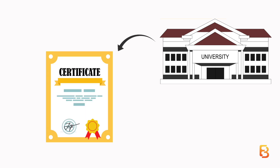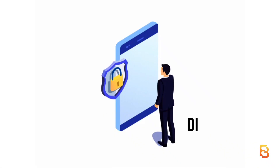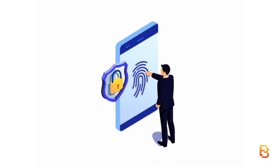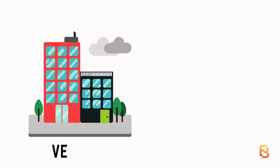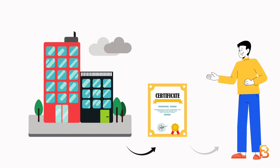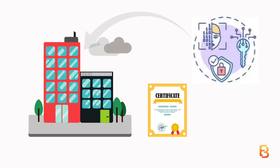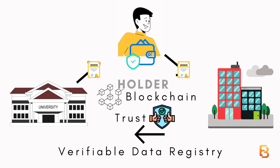However, with Web3 and decentralized identity, University ABC simply issues the educational qualification certificate that belongs to John — so ABC is the issuer and John is the holder. John holds this certificate in his digital wallet, giving him complete control over his credentials. Firm XYZ is the verifier. XYZ sends a request to John for accessing the certificate, John grants access, and XYZ can then cryptographically check the authenticity of the credential.